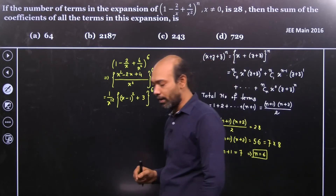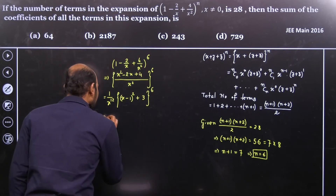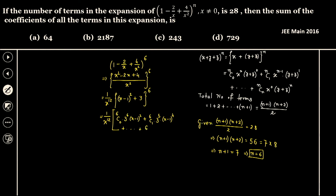We can now write this using the binomial theorem. The expansion becomes 1 over x to the power 12, times the sum: 6C0 times 3 to the power 6 times x minus 1 whole squared, plus 6C1 times 3 to the power 5 times x minus 1 whole to the power 4, and so on, all the way to 6C6 times x minus 1 whole to the power 12.